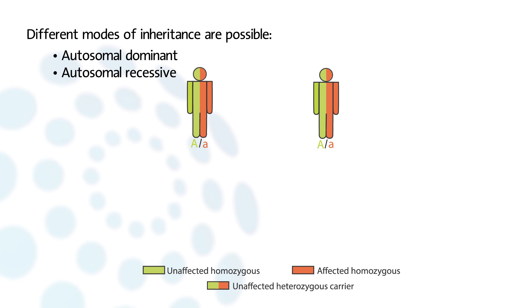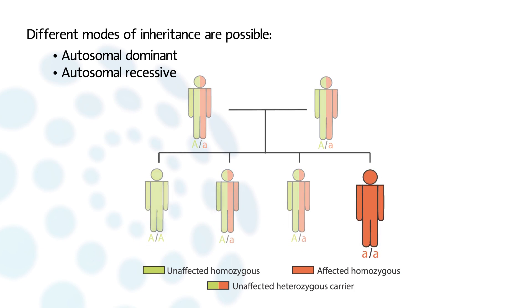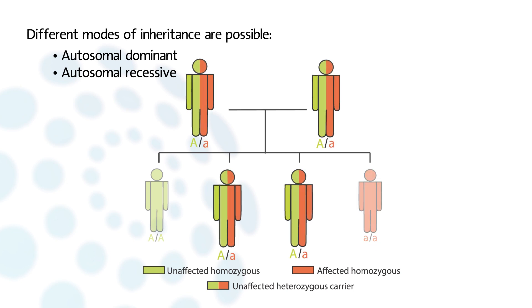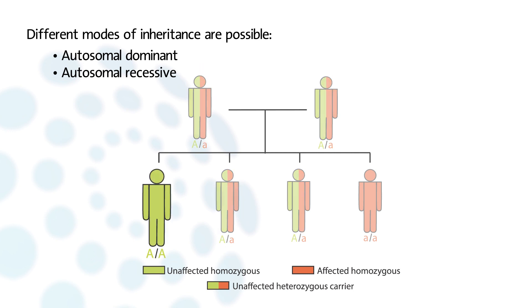Autosomal recessive: both parents carry the mutated gene and the normal gene, but they are not affected — they are said to be heterozygous. A child who inherited both mutated genes from their father and mother is suffering from AI and is said to be a homozygous affected individual. Children who carry only one mutated gene are not sick but are carriers and are at risk of passing it on to their offspring — they are heterozygous healthy carriers. A child who has not inherited any mutated gene is not sick, not at risk of transmitting the disease, and is said to be homozygous healthy.